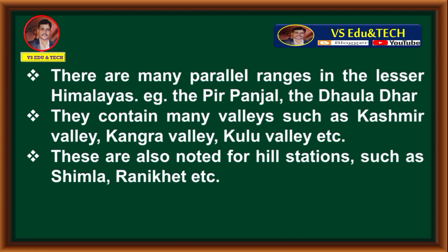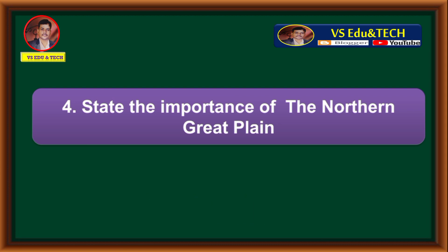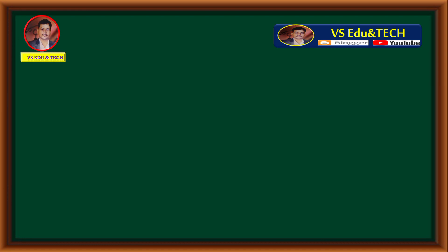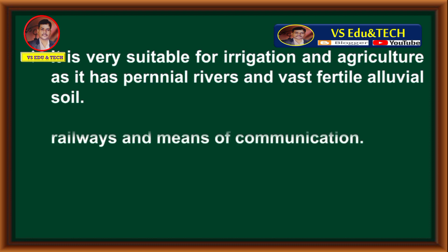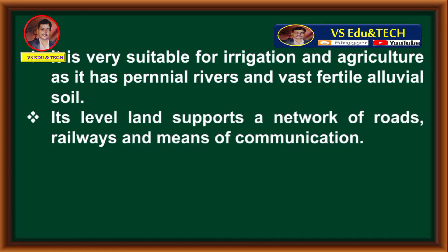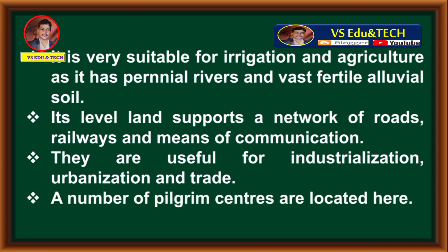Question 4: State the importance of the Northern Great Plain. It is very suitable for irrigation and agriculture as it has perennial rivers and vast fertile alluvial soil. Its level land supports a network of roads, railways, and means of communication. They are useful for industrialization, urbanization, and trade. A number of pilgrim centers are located here.